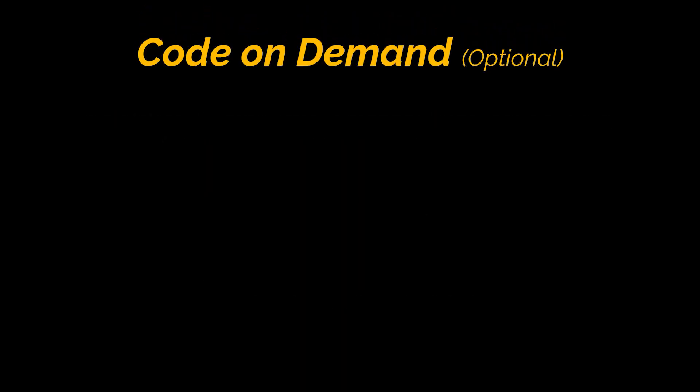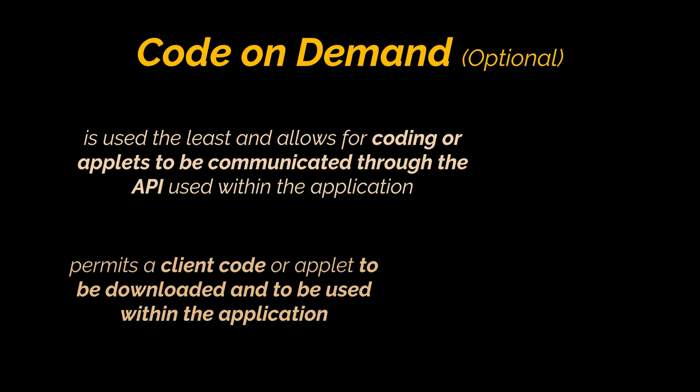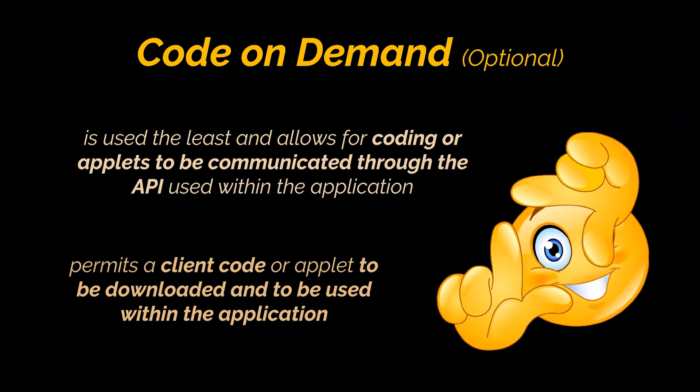Finally, the last constraint is Code on Demand. This one is optional and used the least. This REST principle allows for code or applets to be communicated through the API and used within the application. It permits client code or applets to be downloaded and used within the application, streamlining clients by decreasing the number of features that need to be pre-implemented.